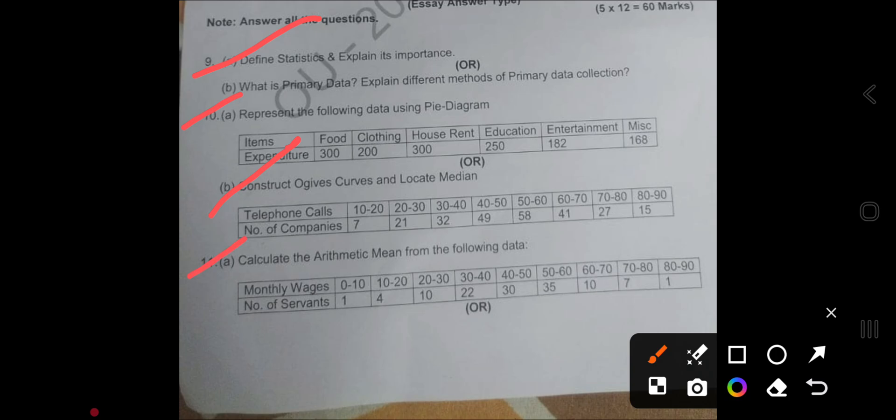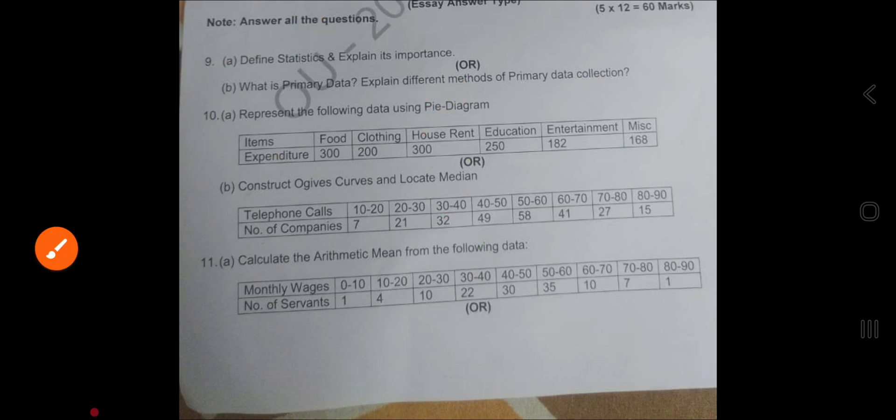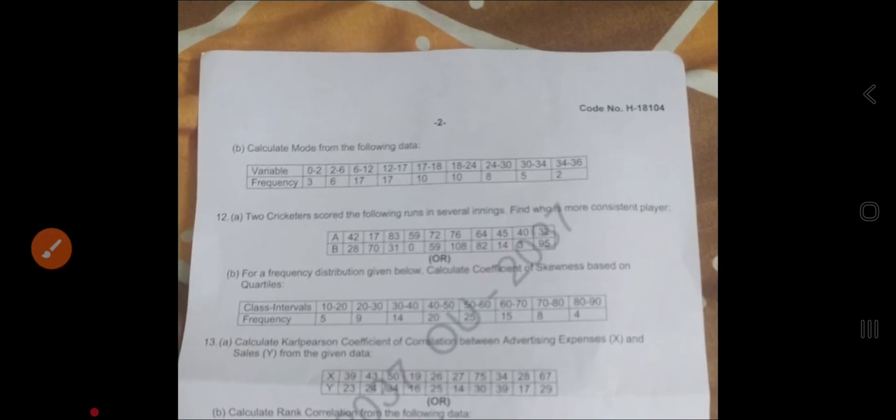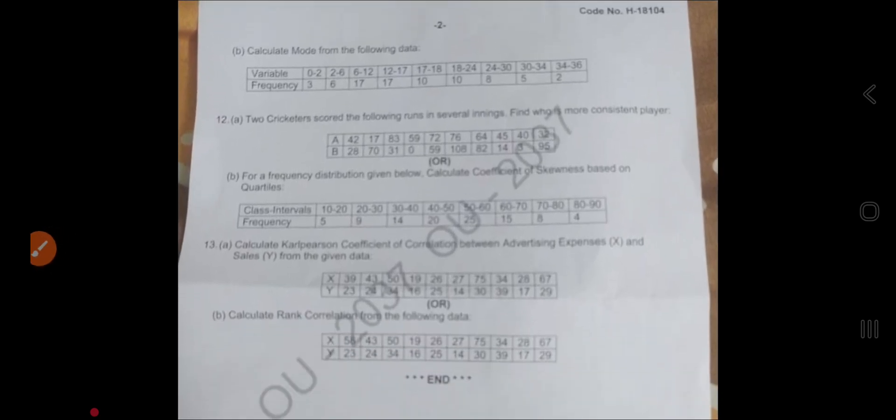Coming to Unit 3: arithmetic mean. How many methods do we have in arithmetic mean? Three methods—direct method, shortcut method, step deviation method. This type of question we already discussed in our explanation videos.